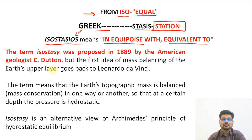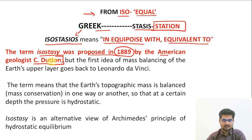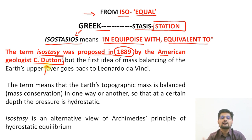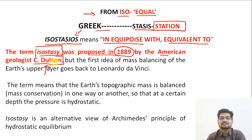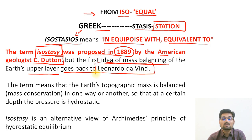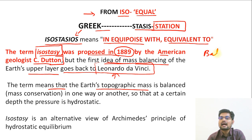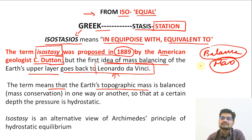The term isostasy was proposed in 1889 by American geologist C. Dutton. It does not mean that before this the concept of adjustment between the upper and inner layers of the earth did not exist — it existed before, but the word itself was given by Dutton. The first idea of mass balancing of the earth's upper layer goes back to Leonardo da Vinci. The term means that earth's topographic mass is balanced — there is a balance between the masses.